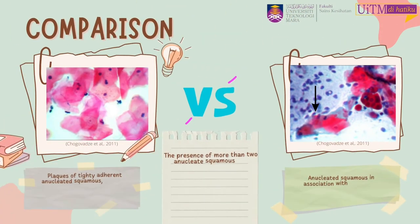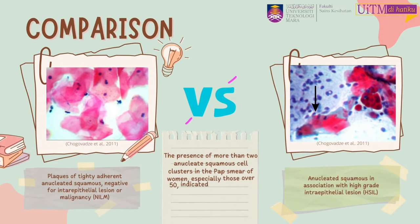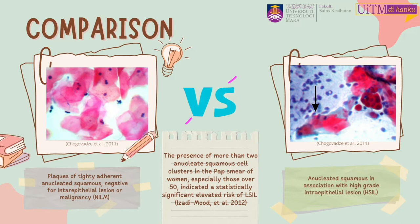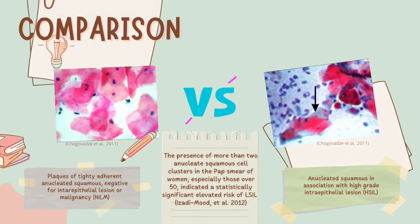Hyperkeratosis does not necessarily indicate the presence of malignancy. As we can see, there is no significant difference between these two hyperkeratosis conditions in terms of shape and colour. Studies of risk in pap smear with hyperkeratosis may vary across other studies.